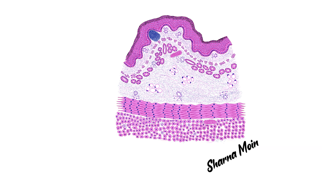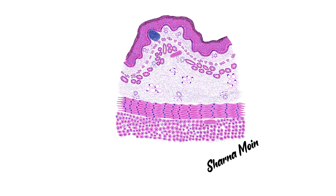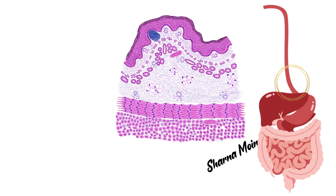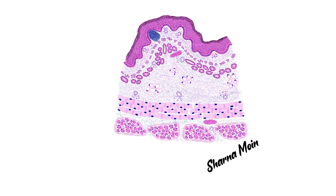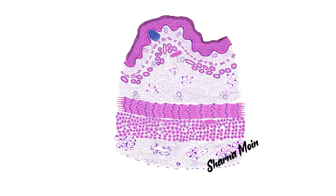In the next picture, both the inner circular and outer longitudinal layers exhibit only smooth muscles, so this section is from the lower third of the esophagus. Between the inner circular and outer longitudinal muscle layers you can see a special nerve plexus known as the myenteric plexus, which innervates the muscle layers and helps in peristalsis. This layer also has blood and lymph vessels.